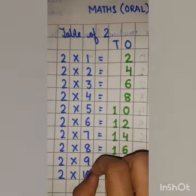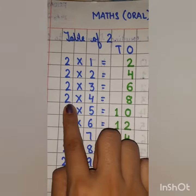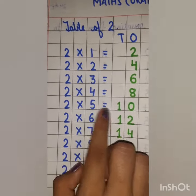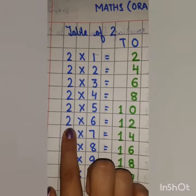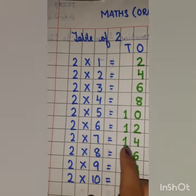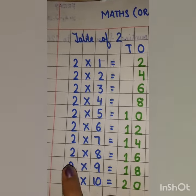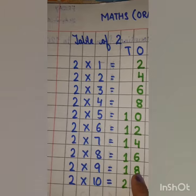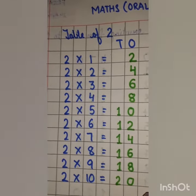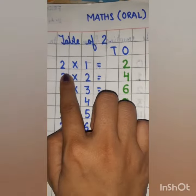2 1s are 2, 2 2s are 4, 2 3s are 6, 2 4s are 8, 2 5s are 10, 2 6s are 12, 2 7s are 14, 2 8s are 16, 2 9s are 18, 2 10s are 20.